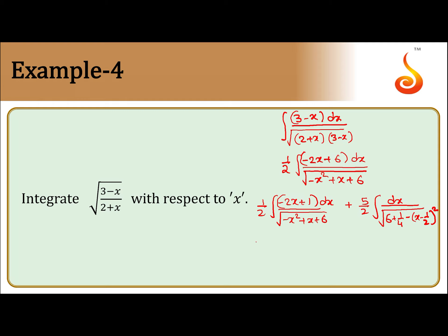This gives us 1/2 times 2 times the square root of f(x), which is the square root of (-x² plus x plus 6), plus 5/2 integral of dx over the square root of (25/4 minus (x minus 1/2)²).